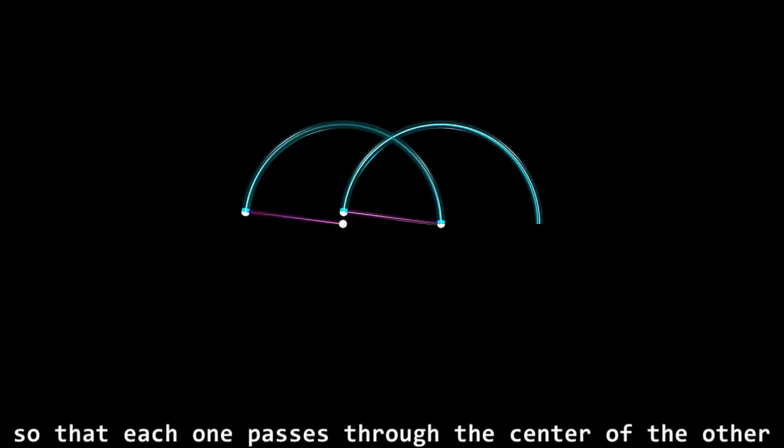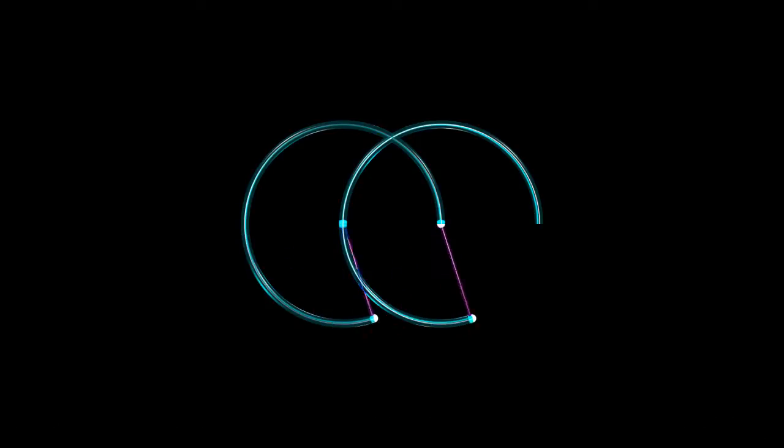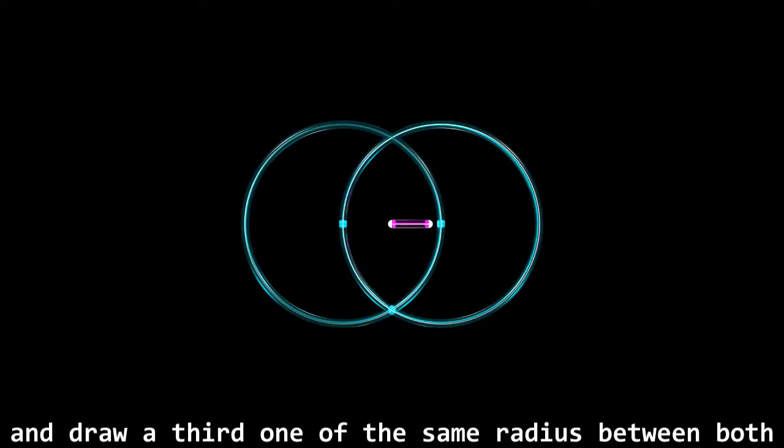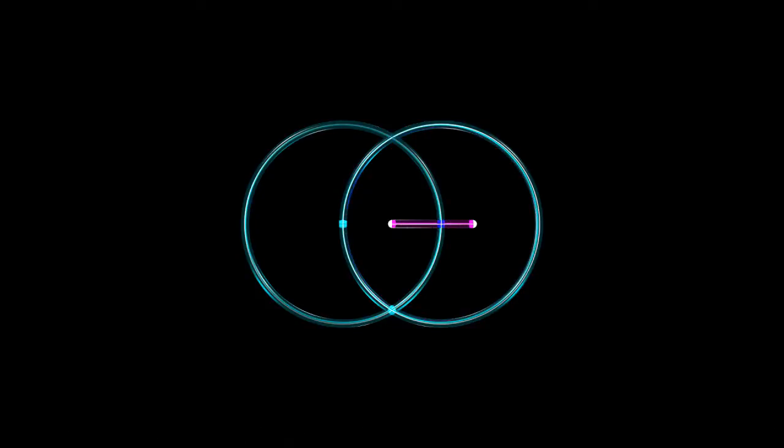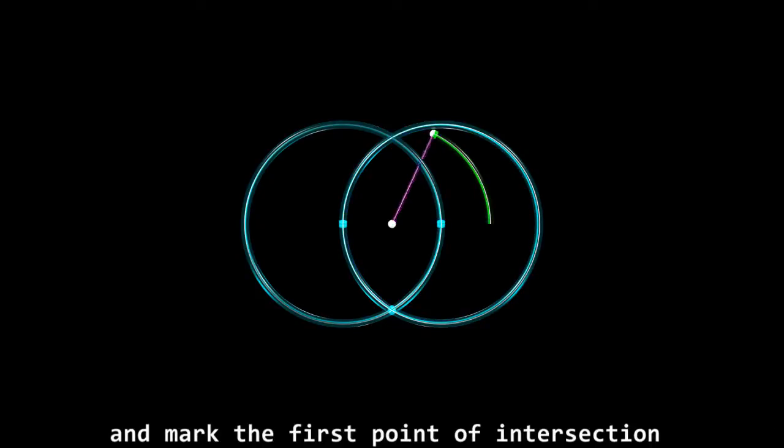We draw again two circumferences so that each one passes through the center of the other. And draw a third one of the same radius between the both, and mark the first point of intersection with the right one.